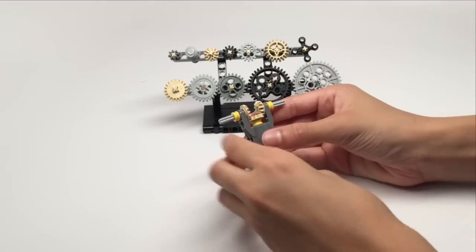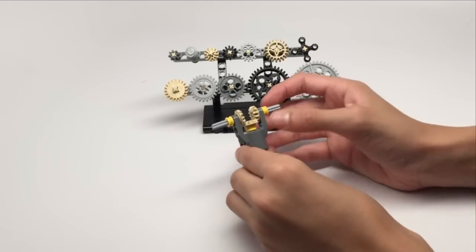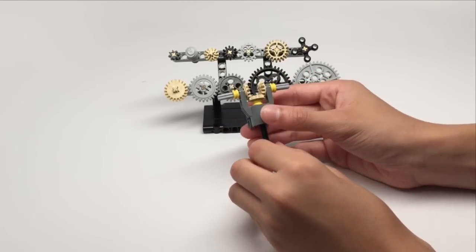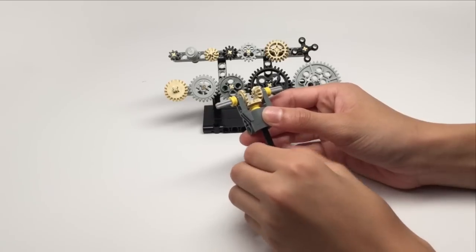This gearbox does the same purpose by reversing the direction spinning, but it also has another axle here. So it transfers motions in three ways.